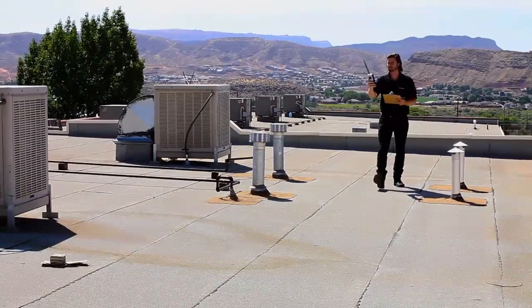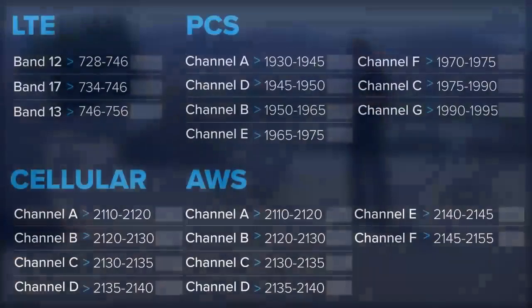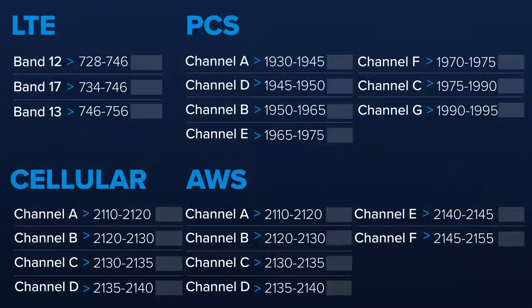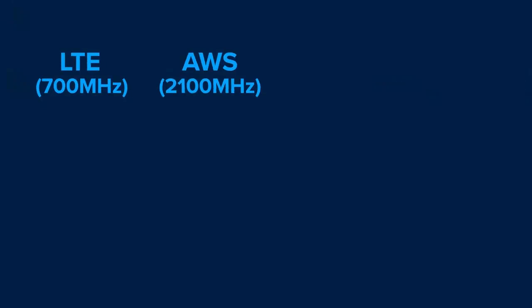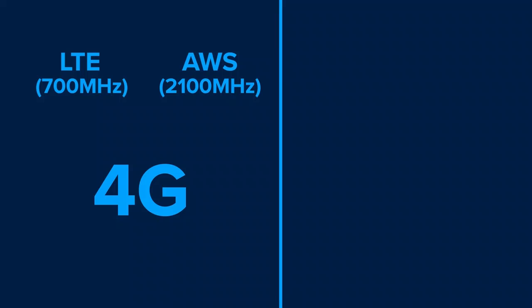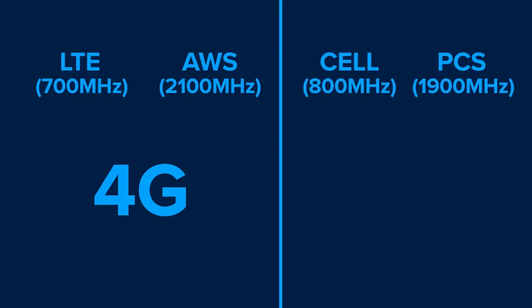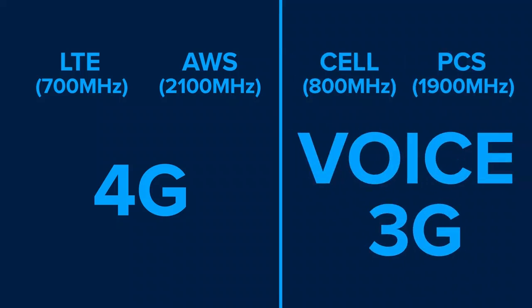Each carrier uses different channels within each frequency range for different uses. The FCC divides up cellular frequency into bands or channels, and each carrier is allotted to certain channels to operate on. LTE and AWS channels are primarily used for 4G data, with some exceptions for voice over LTE. Cellular and PCS, or 800 and 1900 MHz, are exclusively voice and 3G data for all carriers.